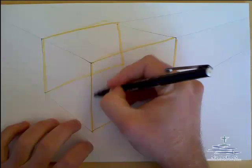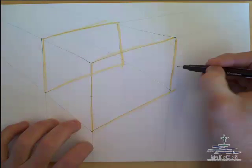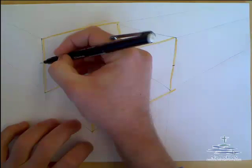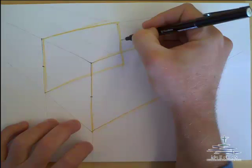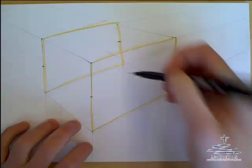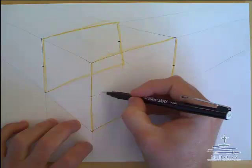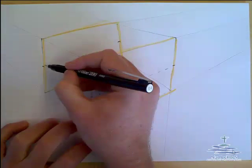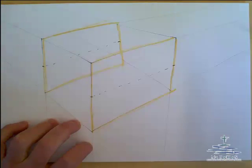Now what we're going to do first is on this line here, we're going to mark halfway, and this one here halfway, and same on the back too. So just the vertical lines at the moment, we're roughly marking halfway, and we're just going to put some little dots as a bit of a guideline to help us so we know where we're working.